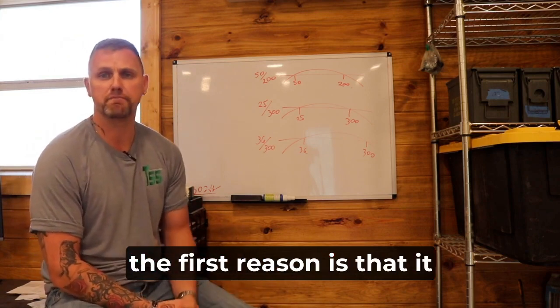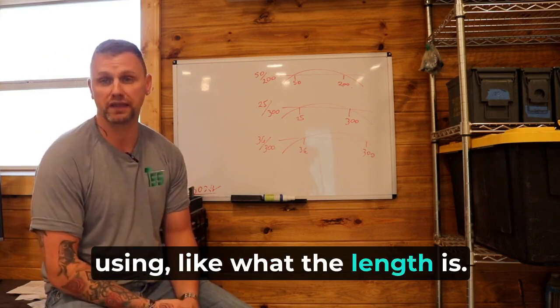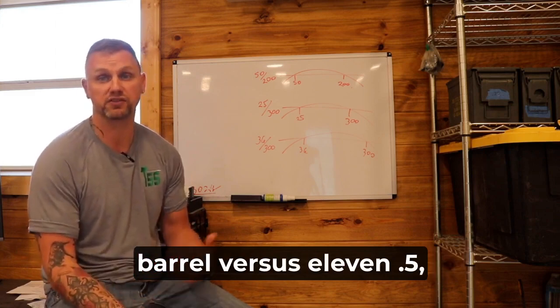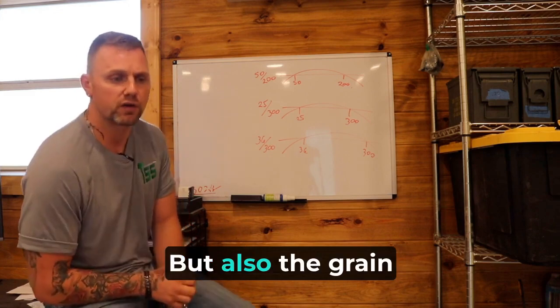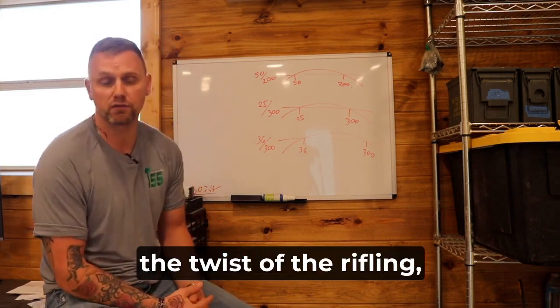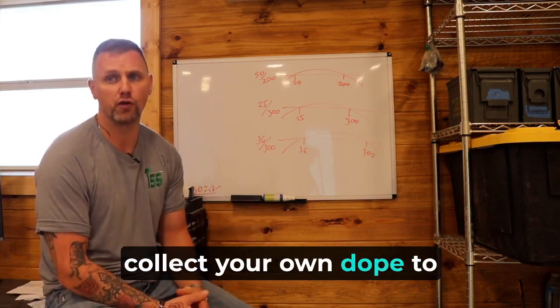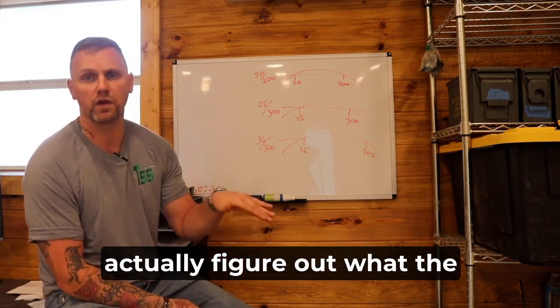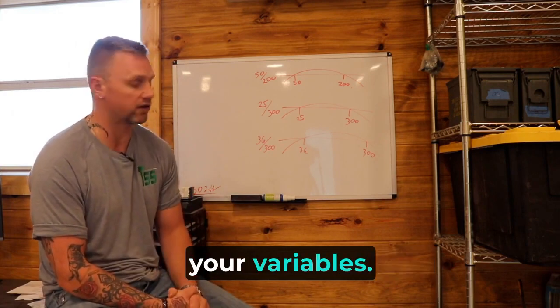Obviously the first reason is that it matters what size barrel you're using, what the length is. If you're talking a 22 inch barrel versus an 11.5, obviously these numbers are going to be substantially different. But also the grain of the bullet, the twist of the rifling, how worn out the rifling is, all that comes into play. So you need to go out and collect your own dope to actually figure out what the tolerances are on your individual shooting and your variables.